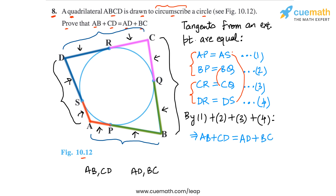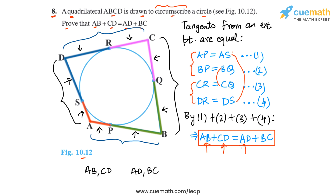This is what we had to prove: AB plus CD is equal to AD plus BC. This is an important result — if a quadrilateral circumscribes a circle, then the two pairs of opposite sides have the same sum, just as AB and CD have the same sum as AD and BC. This completes our proof for question number 8.